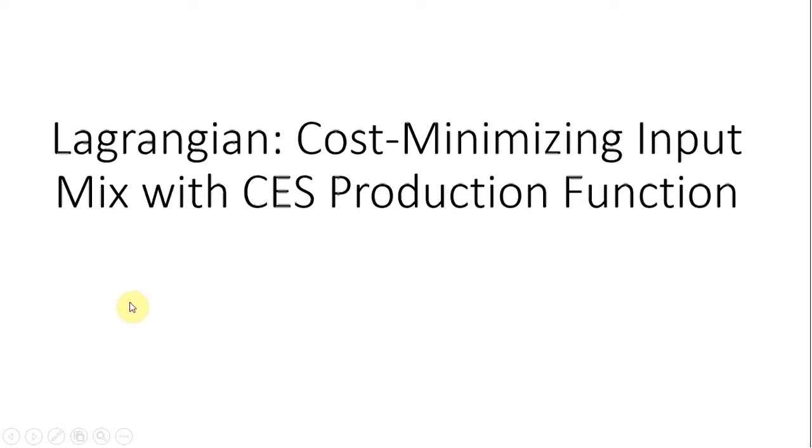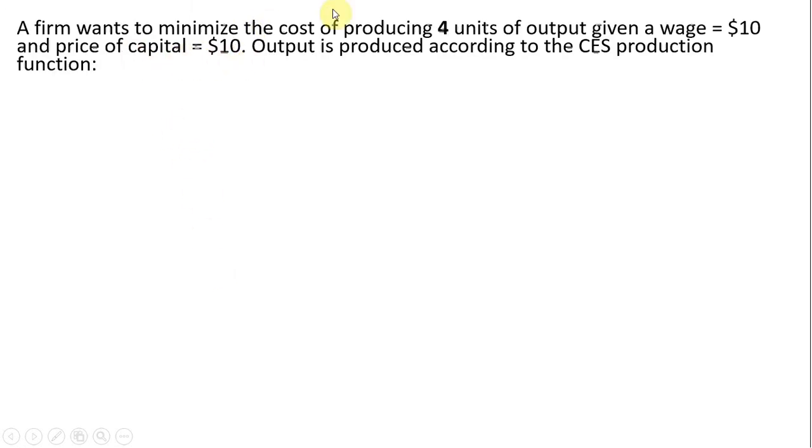Here we're going to use the Lagrangian to find the cost-minimizing input mix for a CES production function. A firm wants to minimize the cost of producing four units of output, given a wage of $10 and a price of capital equal to $10.